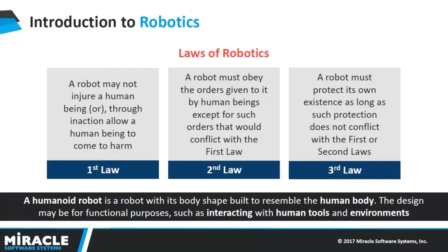We need a few main things for robotics. Those are processors, sensors, and actuators. Processors are used to process the data coming from the sensors and give back the data to the actuators to perform real actions. Robotics are used as substitutes for humans in cases like military, regular works, bomb disposal, bomb detection, and so on.